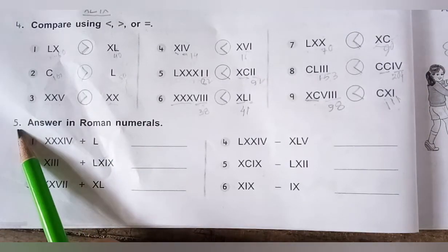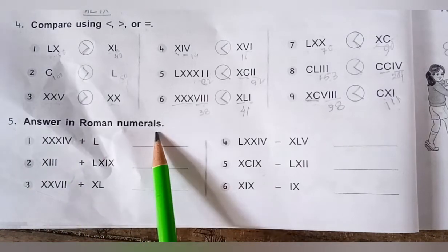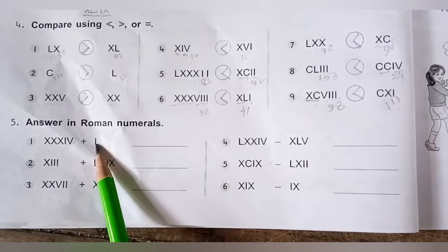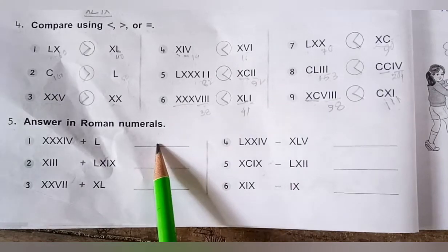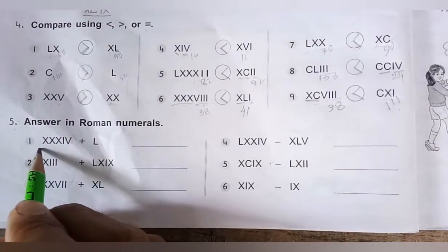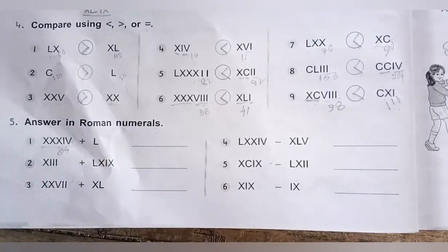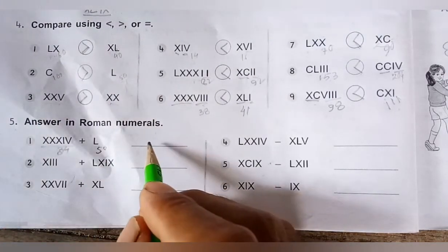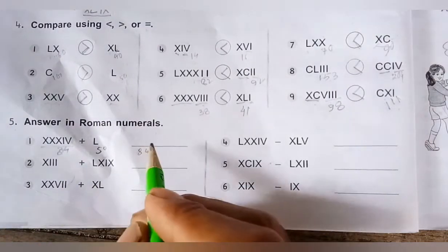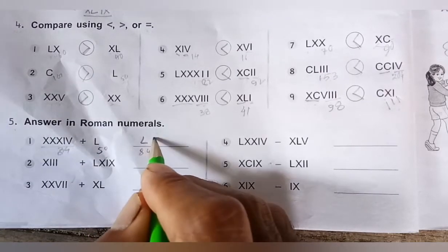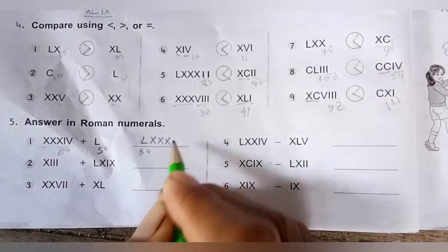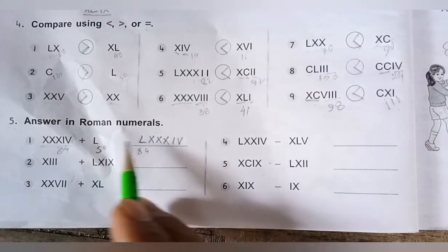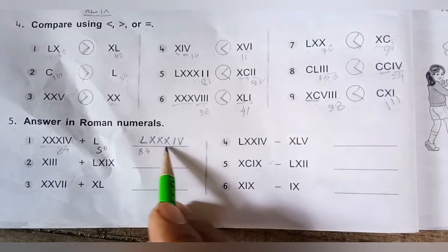Now question number 5: answer in Roman numerals. The first problem: one numeral represents 34 and L represents 50. We know 50 plus 34 is 84. How do we write 84 in Roman numerals? 50 plus 30 is 80, and then 4, so 84 is written as LXXXIV. You have to write the answer also in Roman numerals.